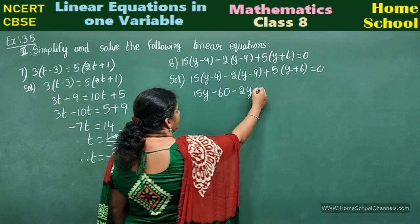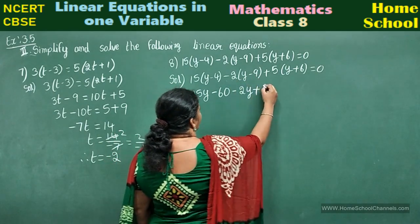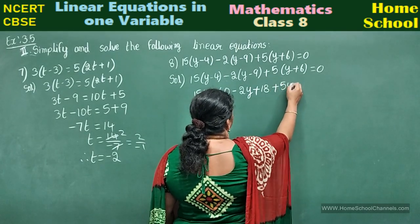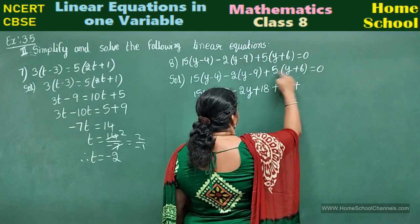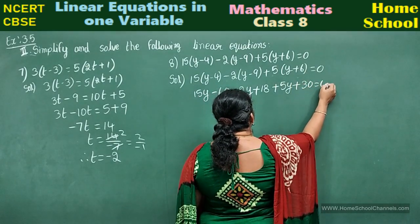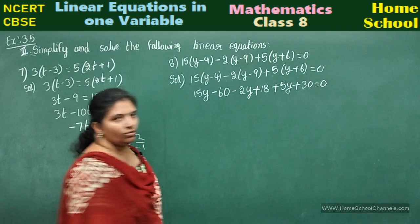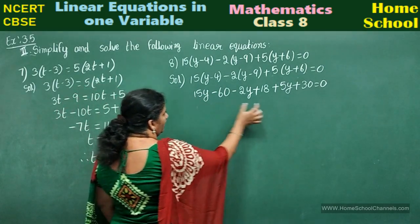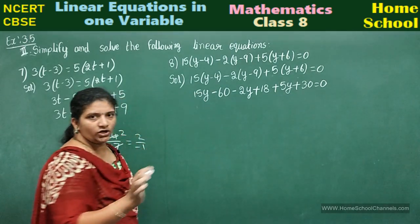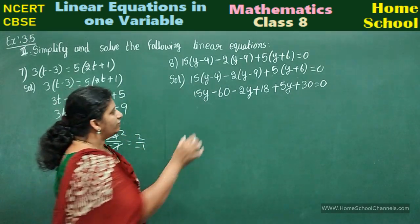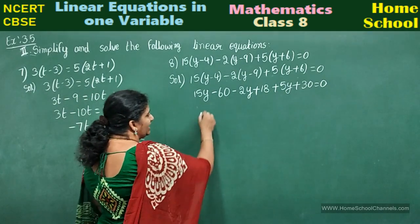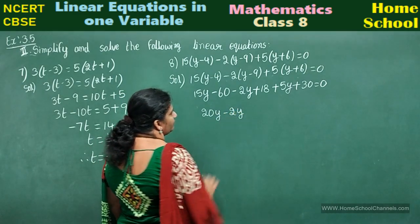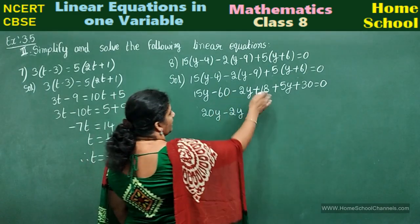Multiply this: 15 into y is 15y minus 15 times 4 is 60. Minus 2 into y: minus 2y, and minus minus plus: 2 times 9 is 18. Plus 5 into y: 5y plus 5 times 6 is 30, equal to 0. Now see all y terms here: 15y plus 5y will be 20y minus 2y.